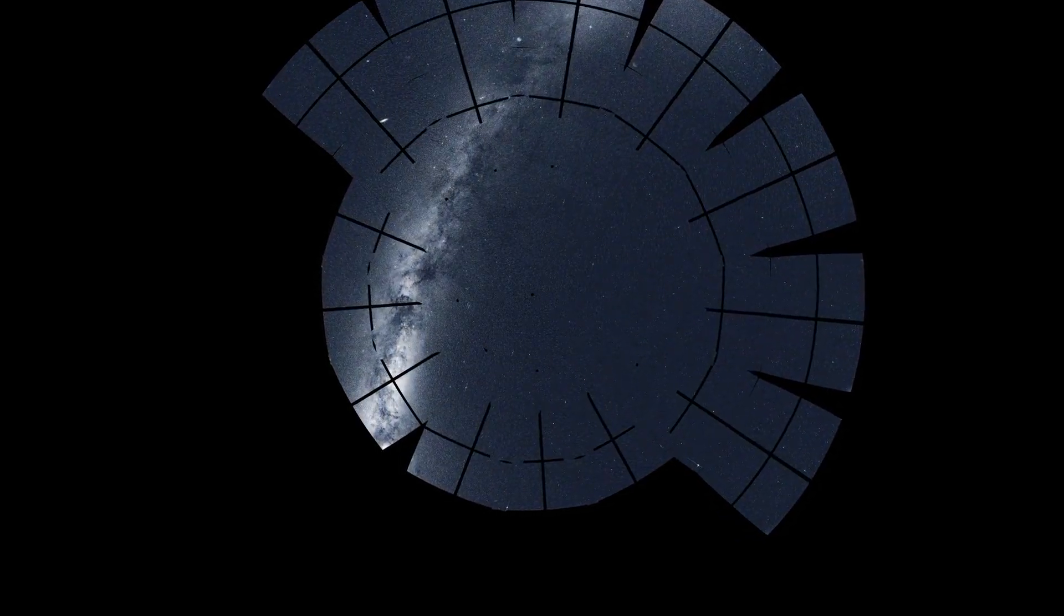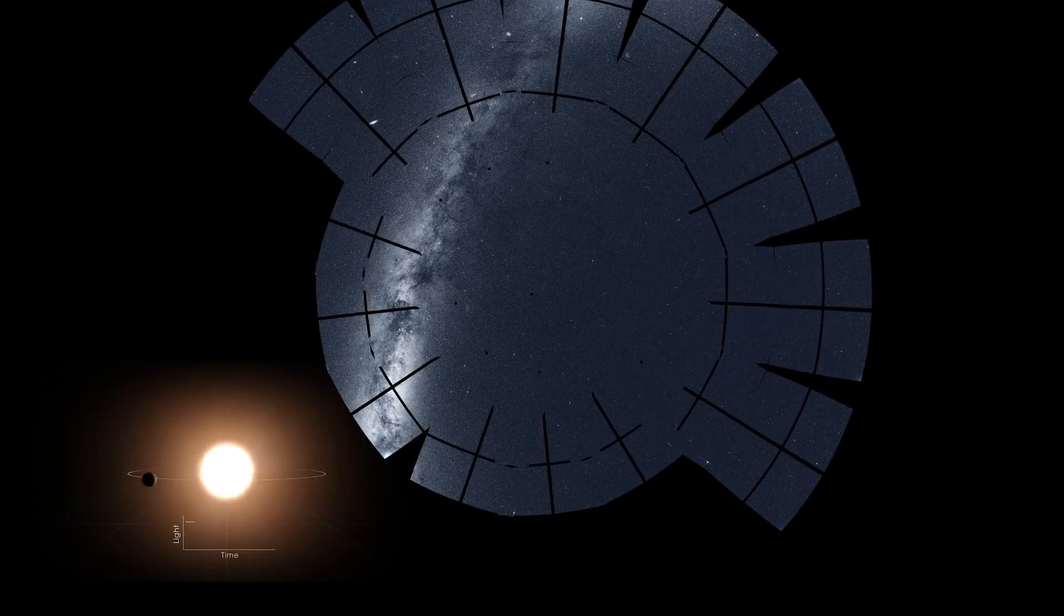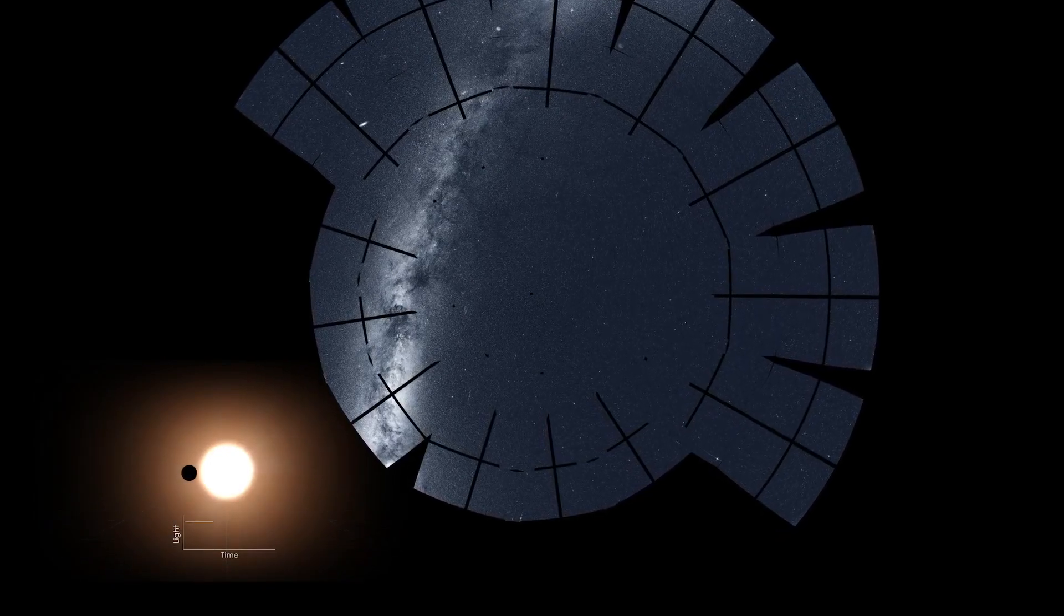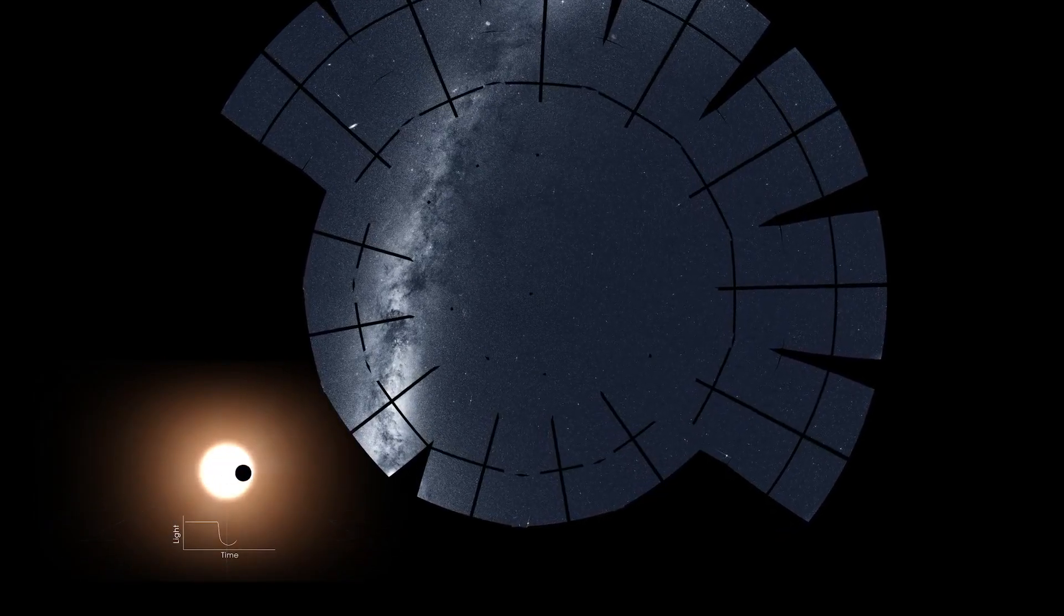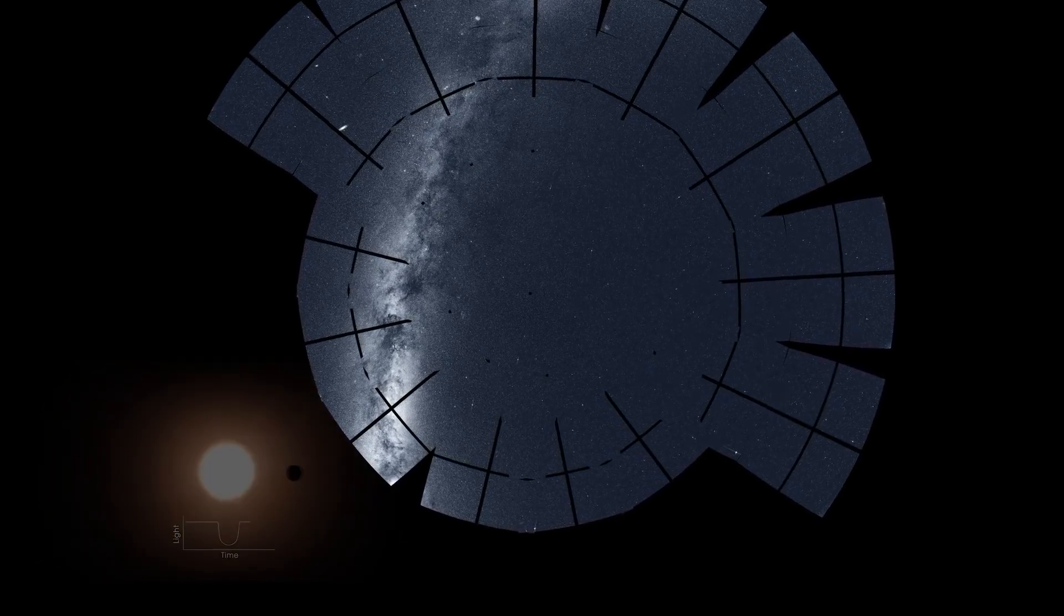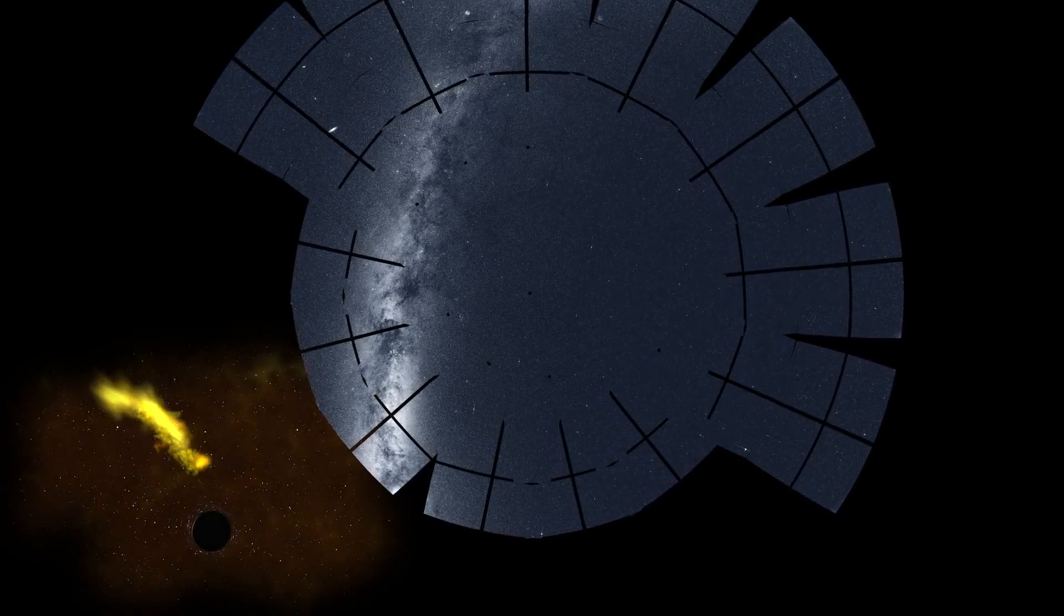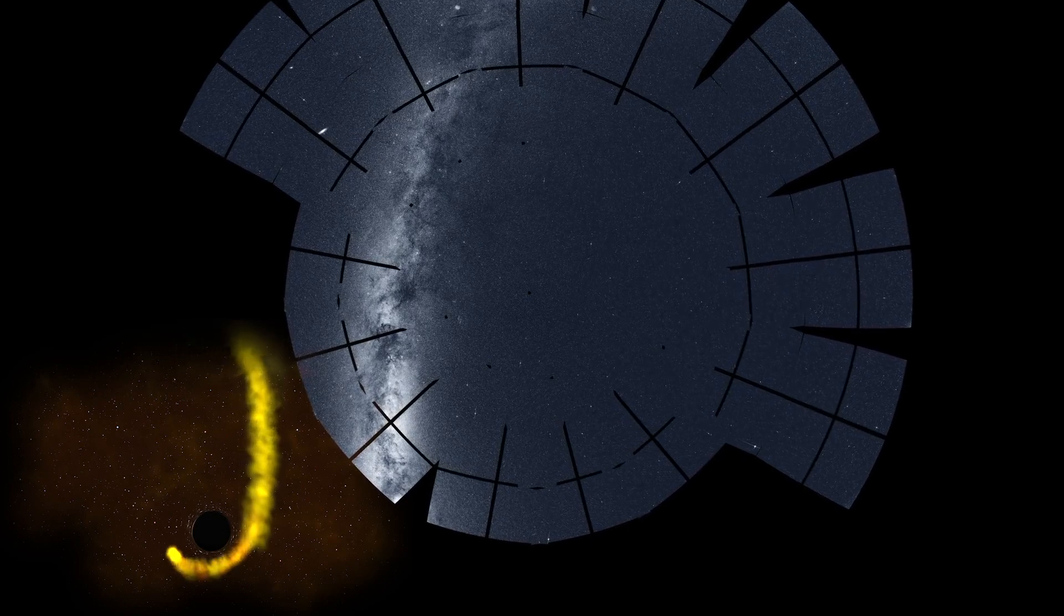With these extended views, TESS looks for slight dips in starlight when distant planets pass in front of their host stars. But it also caught short-lived events, such as a black hole tearing apart a star that wandered too close.